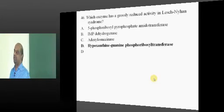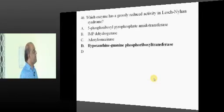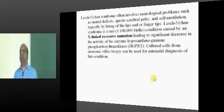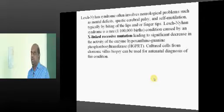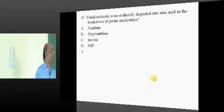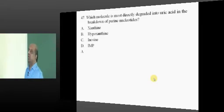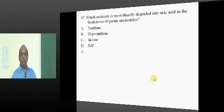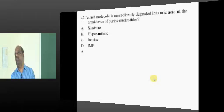Lesch-Nyhan syndrome, hypoxanthine guanine phosphoribosyl transferase, HGPRT deficiency. It is an X-linked recessive disorder. Now, among the purine nucleotides whose breakdown directly leads to the uric acid formation.